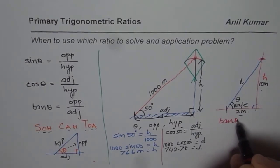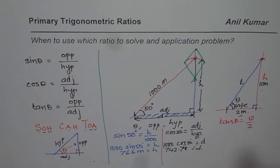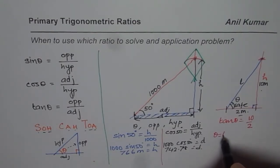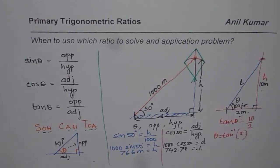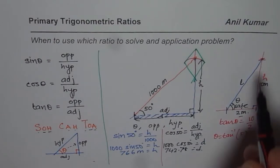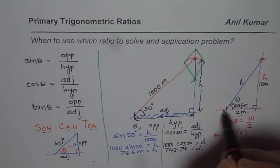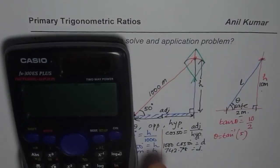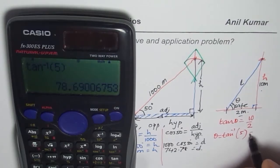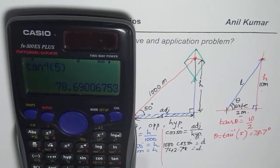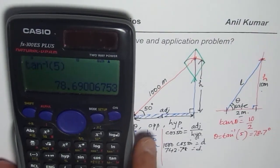So tan theta equals 10 over 2, which is 5. To solve, theta equals tan inverse of 5, which gives approximately 78.7 degrees. So your ladder will be at an angle of 78.7 degrees with the horizontal.